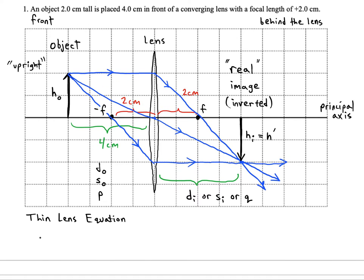Is going to be one over S-O plus one over S-I equals one over F. You might also see it as one over D-O plus one over D-I equals one over F. Alright, so we want to plug in and solve. So let's plug in our distance of the object which is four centimeters. And then we have to plug in the focal length of two centimeters.